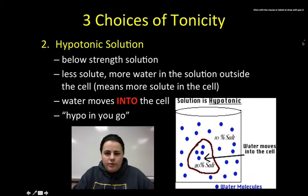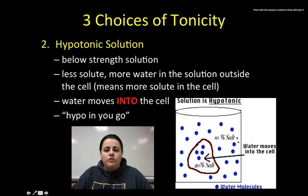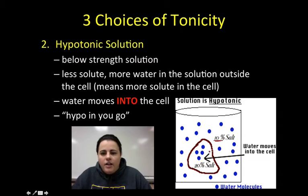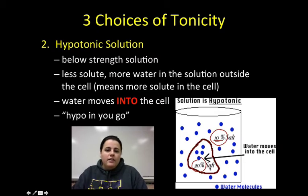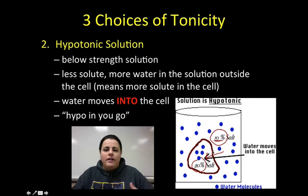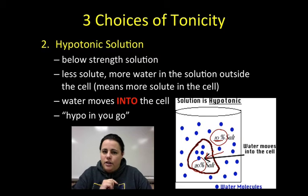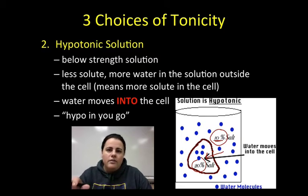The next one is a hypotonic solution. Hypo means below, so the solution surrounding the cell is below the concentration inside the cell. When this occurs, there's more solute on the inside of the cell — more salt on the inside, as shown in the picture. That's going to cause water to undergo osmosis and enter the cell. A memory trick: hypo, in you go. When a cell is surrounded by a hypotonic solution, water will go into the cell.